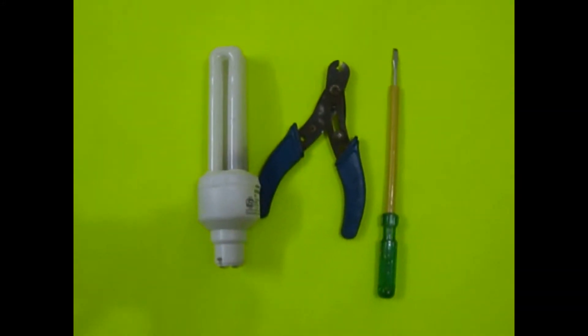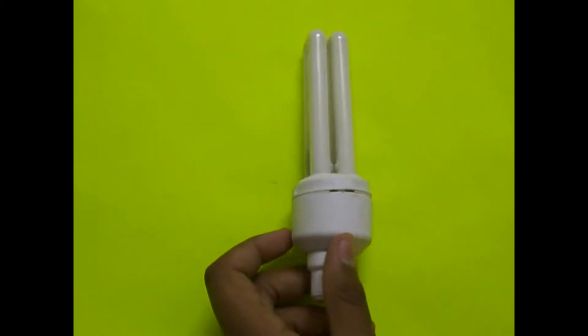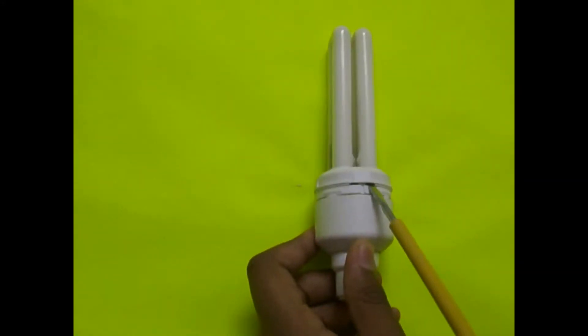Opening a CFL is just as easy as opening a pen cap. Just find a joint in the plastic body of the CFL and use the screwdriver to try to open it.